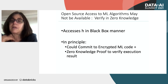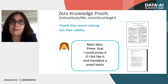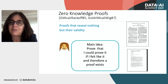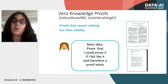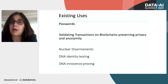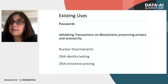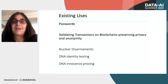Zero knowledge proofs reveal nothing but the validity of the statement. For example: I prove to you that what's being encrypted is a password, or any other mathematical statement — without giving you the password itself, I prove I know it, and that's sufficient. In the past, zero knowledge has been used for passwords, for blockchains — validating transactions while preserving privacy and anonymity — and it's been proposed for DNA identity testing, innocence proving, and even nuclear disarmament.